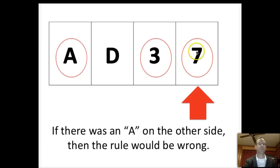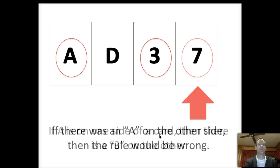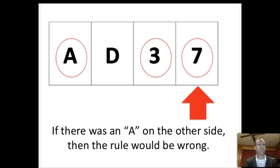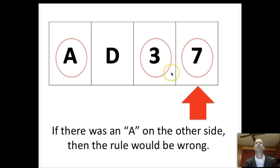You would actually want to turn over the seven. If you turn over the card with a seven and there's an A on the other side, then the rule is wrong — the rule that if there's an A on one side, there's a three on the other. The seven card gives you the opportunity to falsify or prove the rule wrong. But people have a real difficult time with this because we have a natural tendency to want to prove what we think is true, not to disconfirm it. We only look for cases where our theory is correct, not cases where it falls apart.